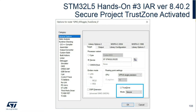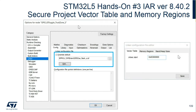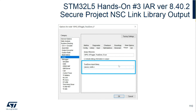Looking at the IAR configuration: TrustZone is enabled — this is the secure project for TrustZone. Looking at the linker file, it's the same as the previous hands-on example. We're locating the secure code in bank one at 0x0C00000. The SRAM is at 0x30000000. The output of the secure NSCLib.a binary is what's new — this file is output from the secure project and will be linked into the non-secure project.